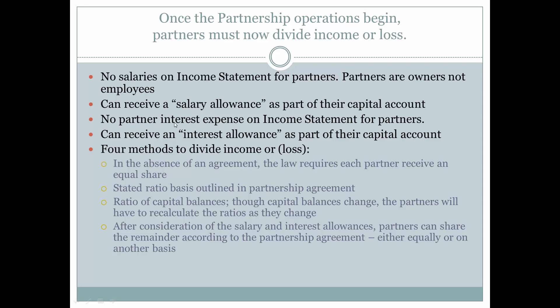Additionally, one partner may have invested a great deal of assets into the partnership. Maybe they're not business-savvy and not interested in the day-to-day operations with clients. They would receive an interest allowance as though the partnership were paying them interest for the use of their assets. After taking into consideration salary and interest allowances in the capital accounts, there are four methods to divide the remaining income from net income.